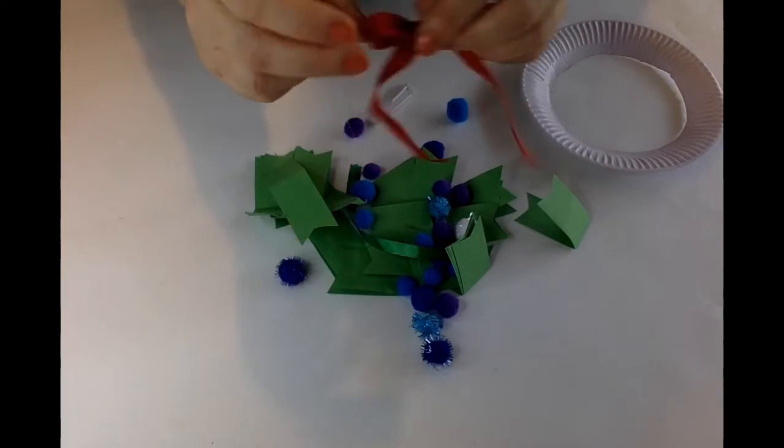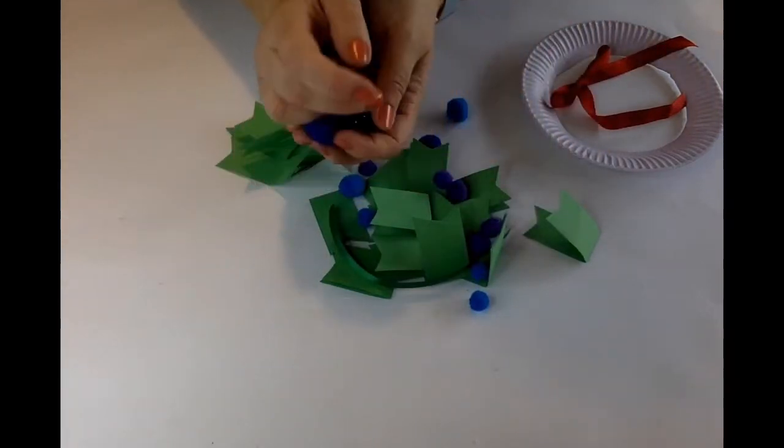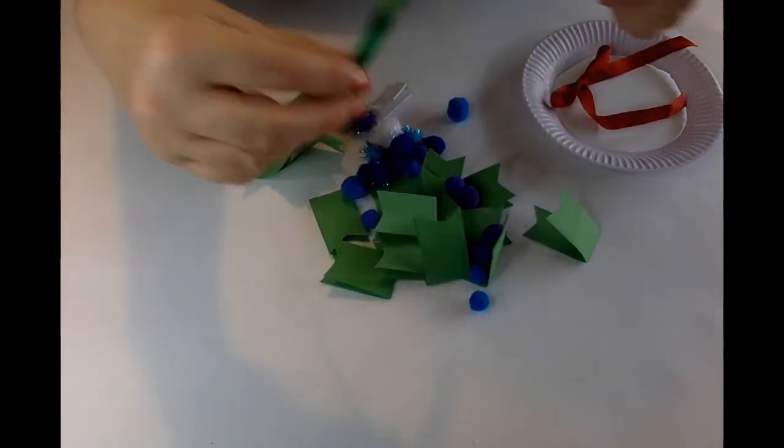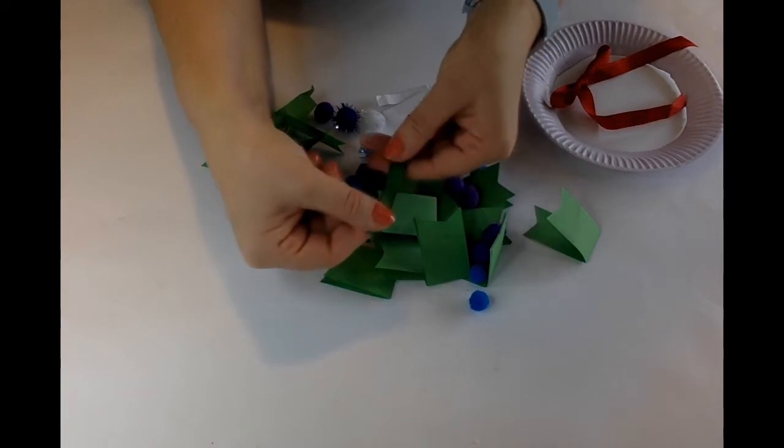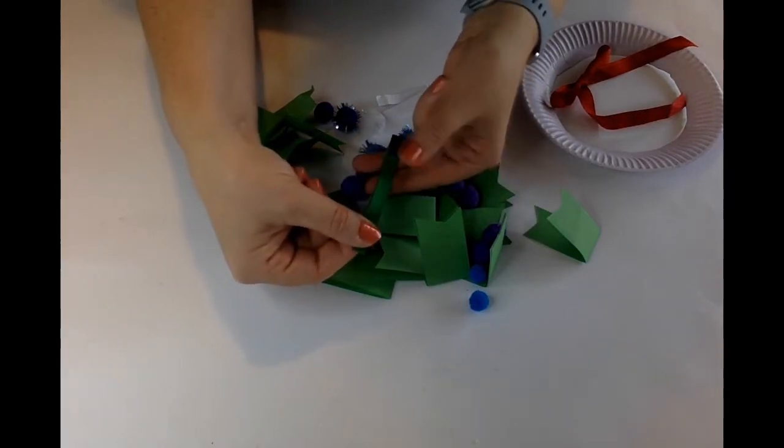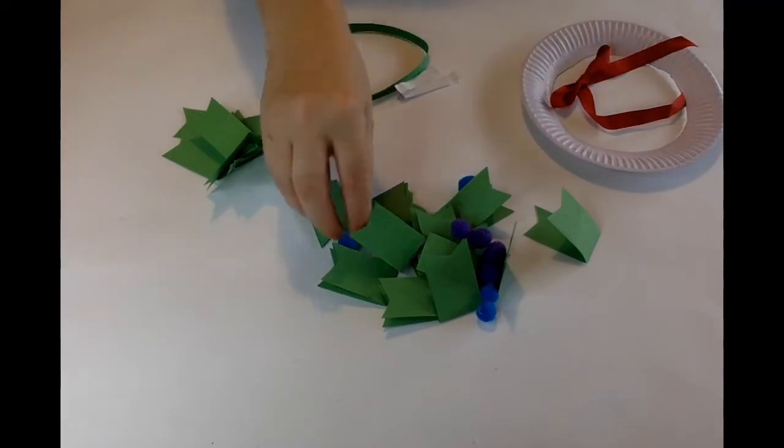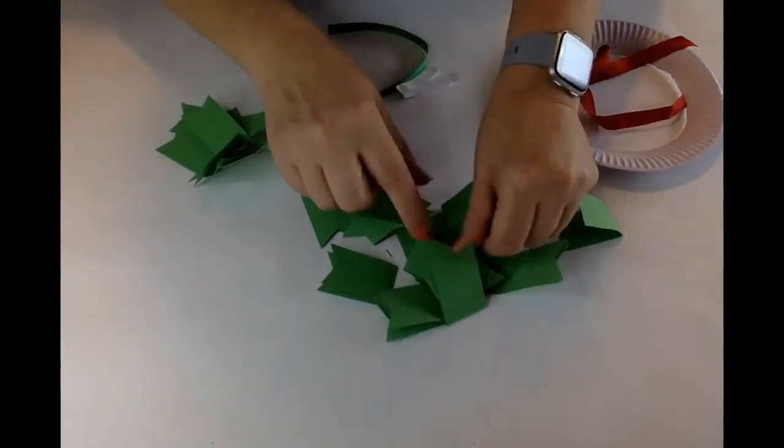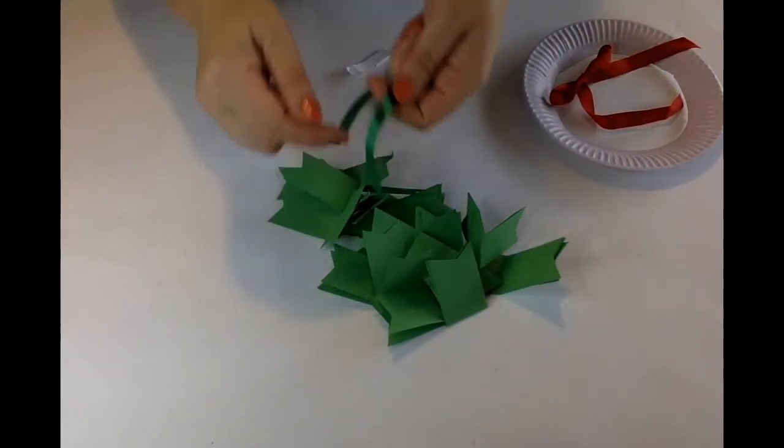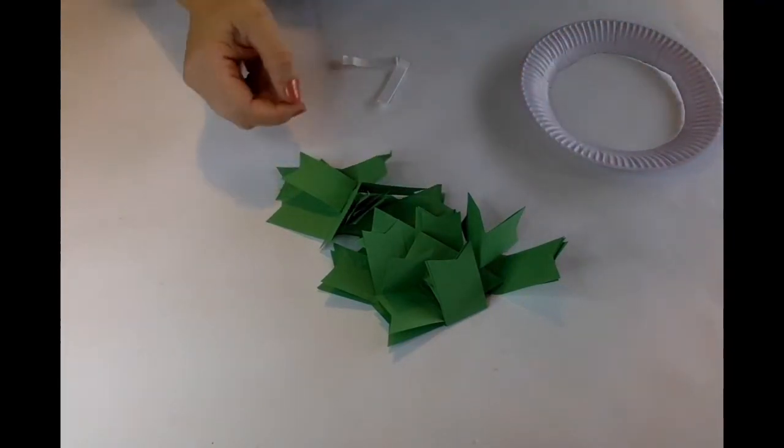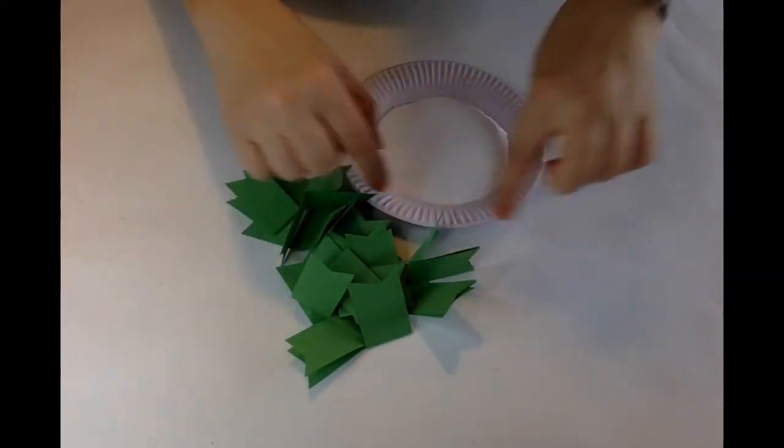You should have a bow and about 15 or 20 pom-poms in all different colors. And lastly you should have a hanger which will stick on at the end of your ring. So what we're going to do first is move the pom-poms aside because we don't need those yet. We're going to keep the glue dots, move the bow out of the way, and then get ready to assemble the outer part of our ring.